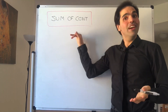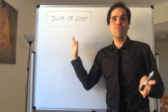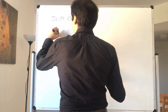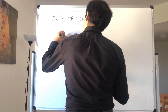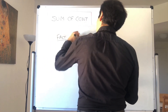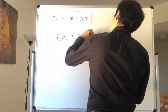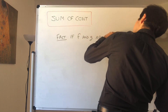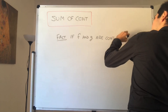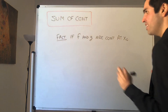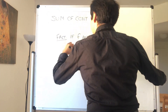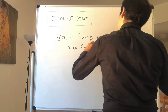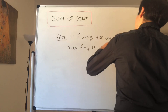The following is one of my favorite proofs in analysis because it's just so elegant. Fact: if f and g are continuous at x naught — some real number x naught — then the sum f plus g is continuous at x naught.